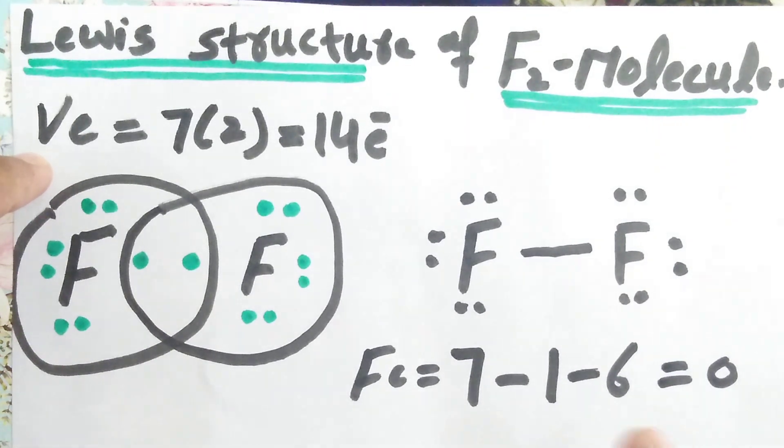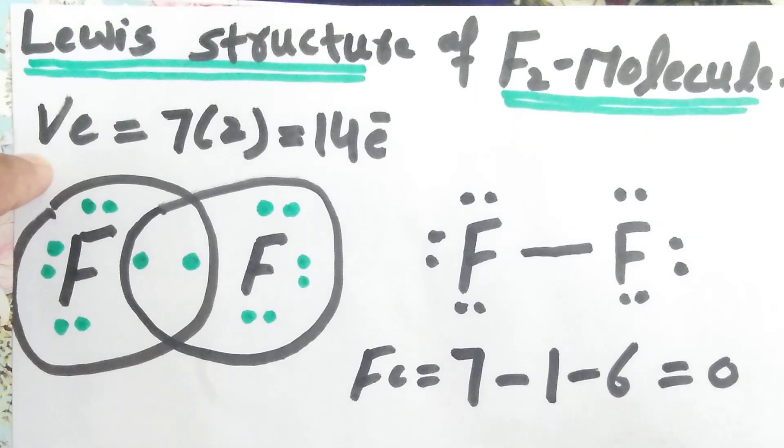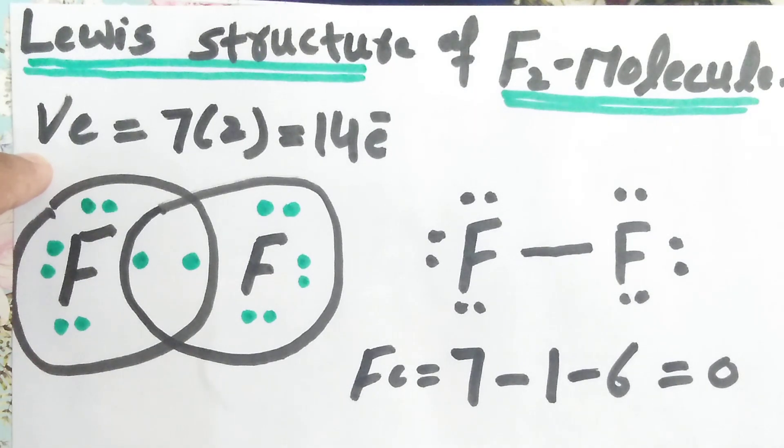On both of the fluorine atoms, the formal charge is equal to 0. So this is the best Lewis structure of F2 molecule. Wish you all the best.